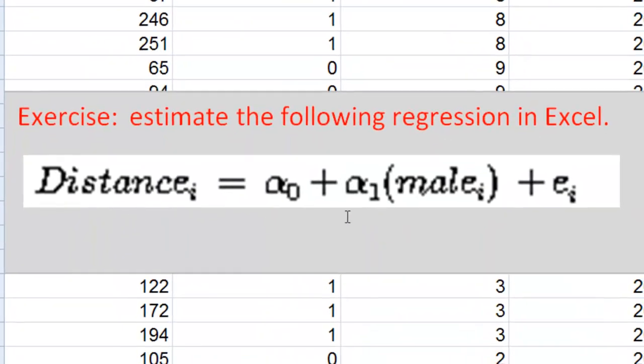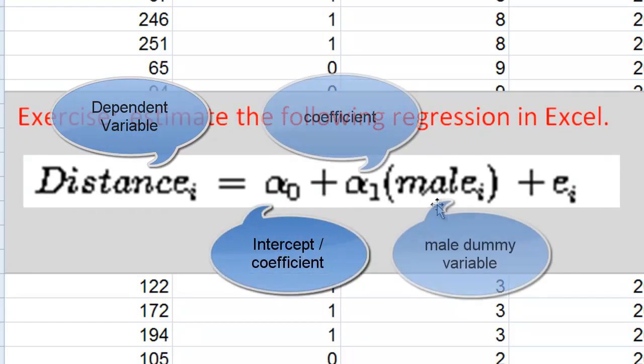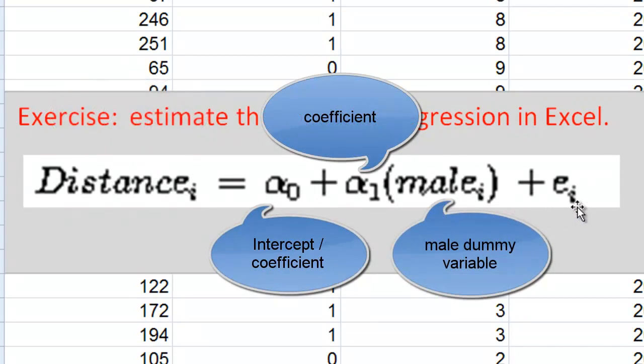because what we want to do is estimate a regression like the one here where we predict hitting distance as equal to an intercept plus a coefficient times the male dummy variable plus a prediction error.